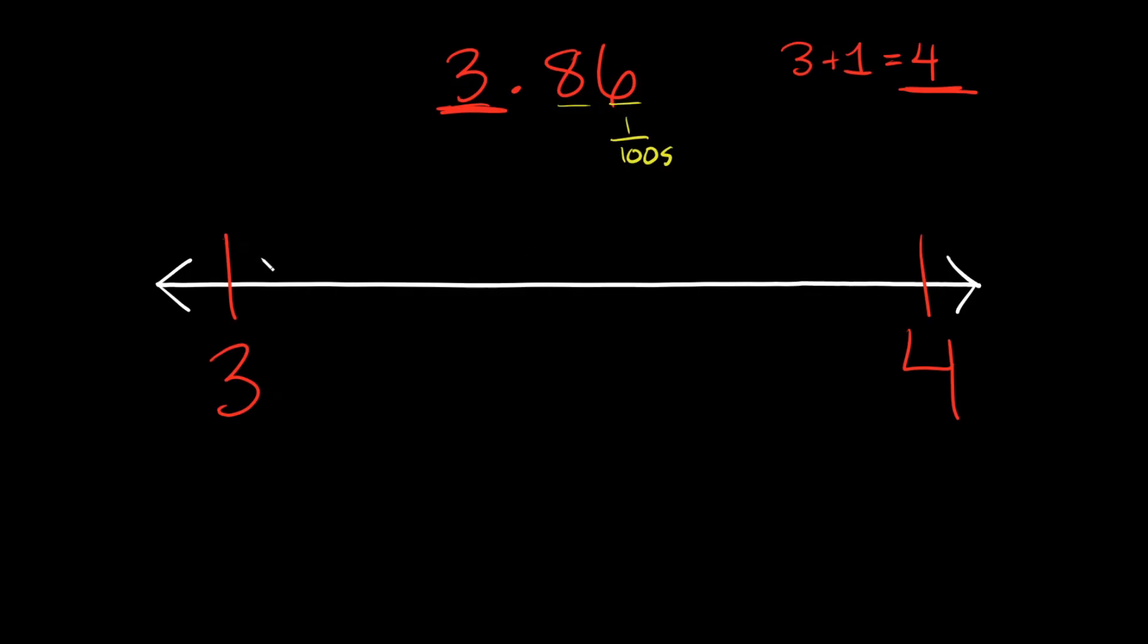So that means I have to split this up into 100 little pieces. But again, that takes too long. So instead, I'm going to just count by 10s. So I'm going to split it up into 10 pieces instead. 1, 2, 3, 4, 5, 6, 7, 8, 9.